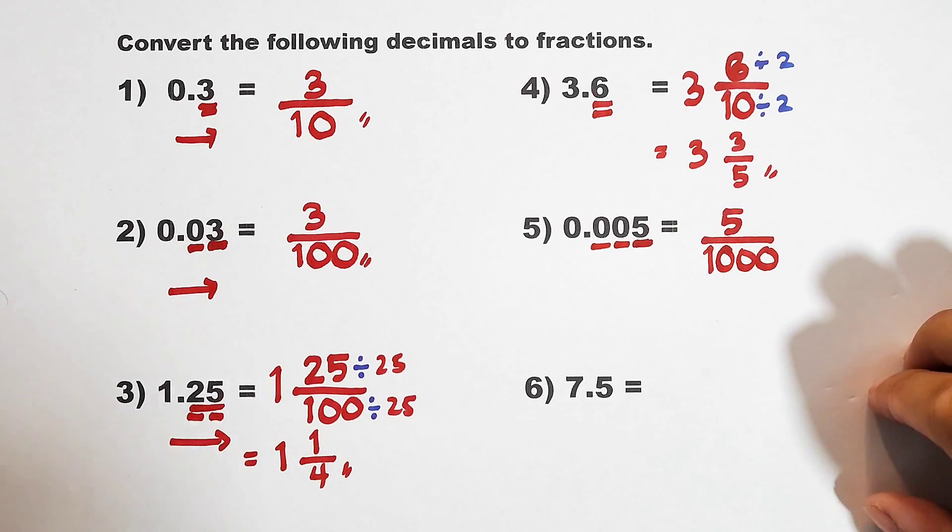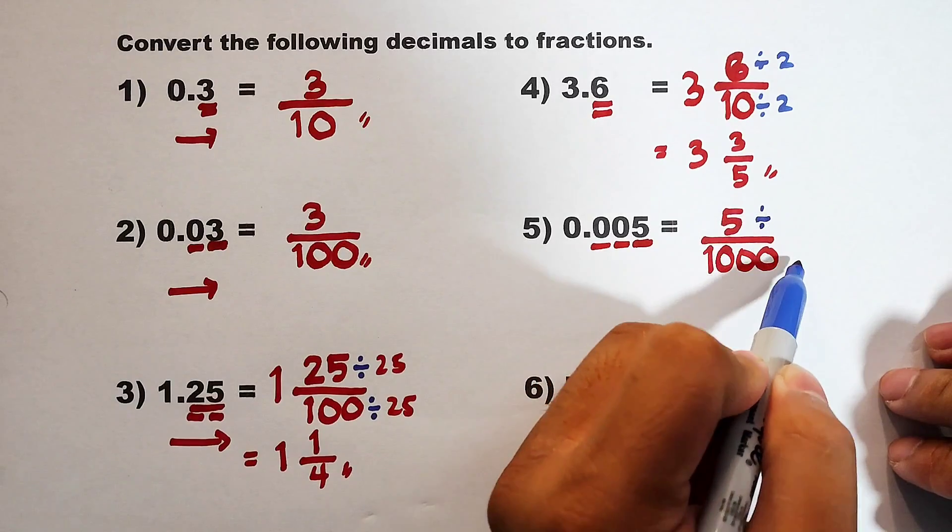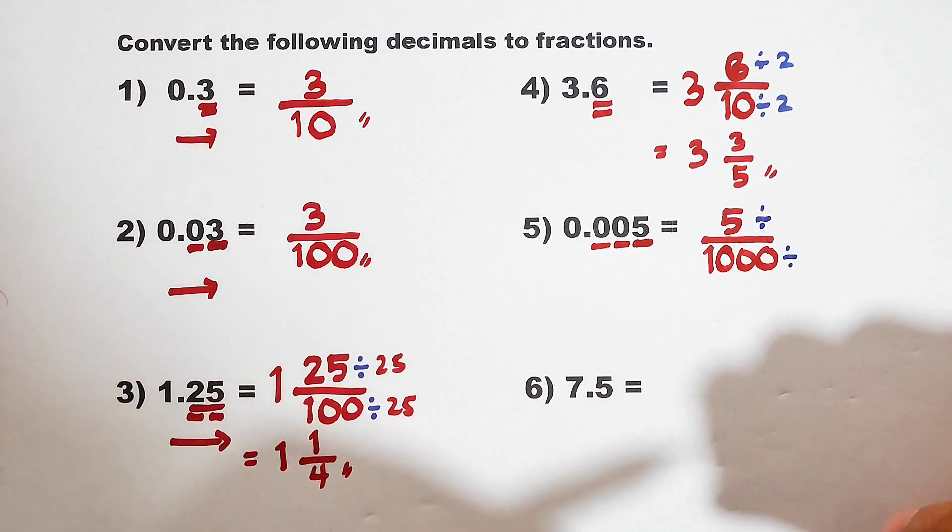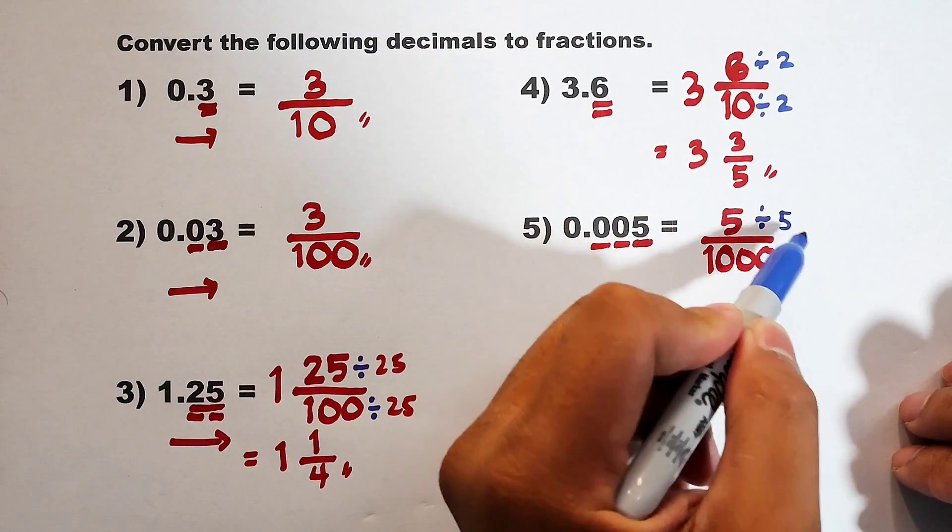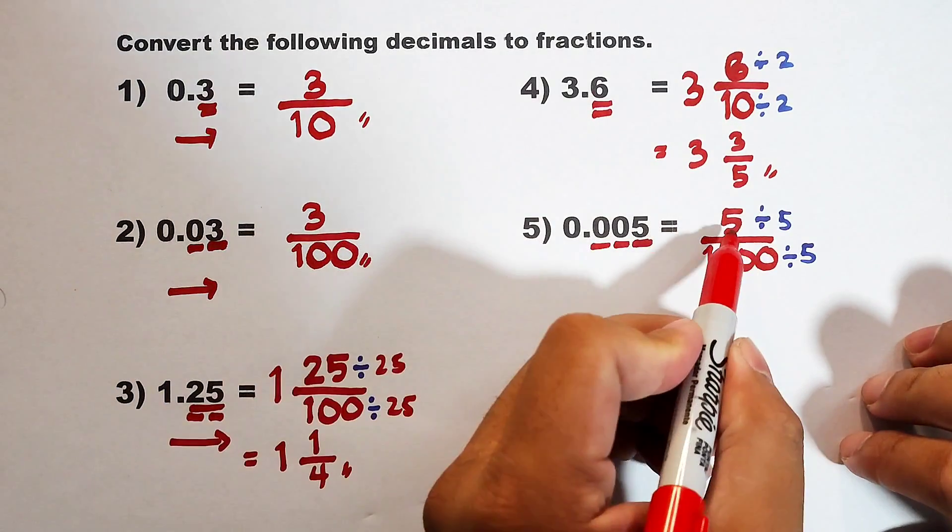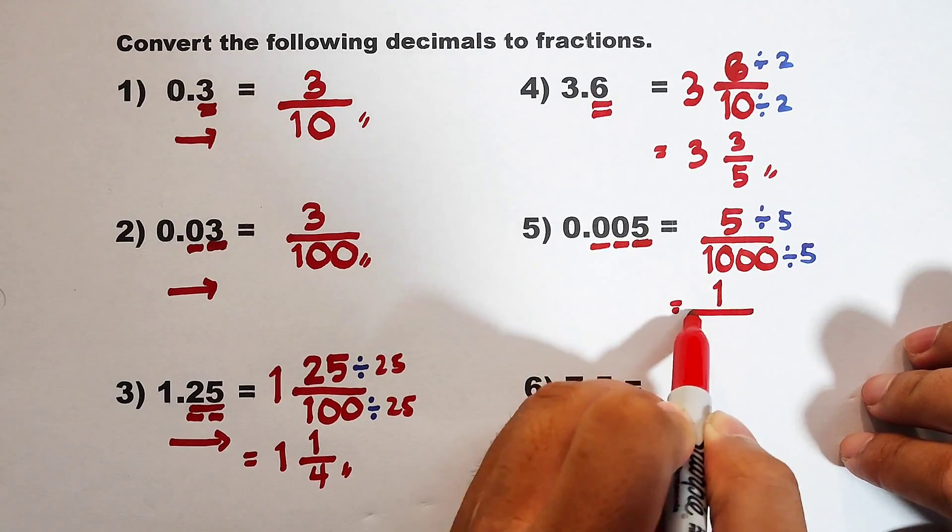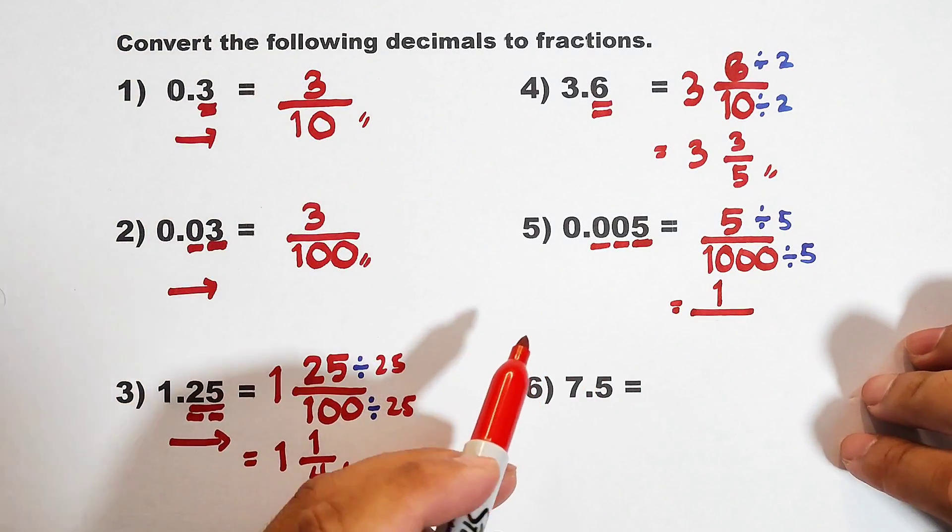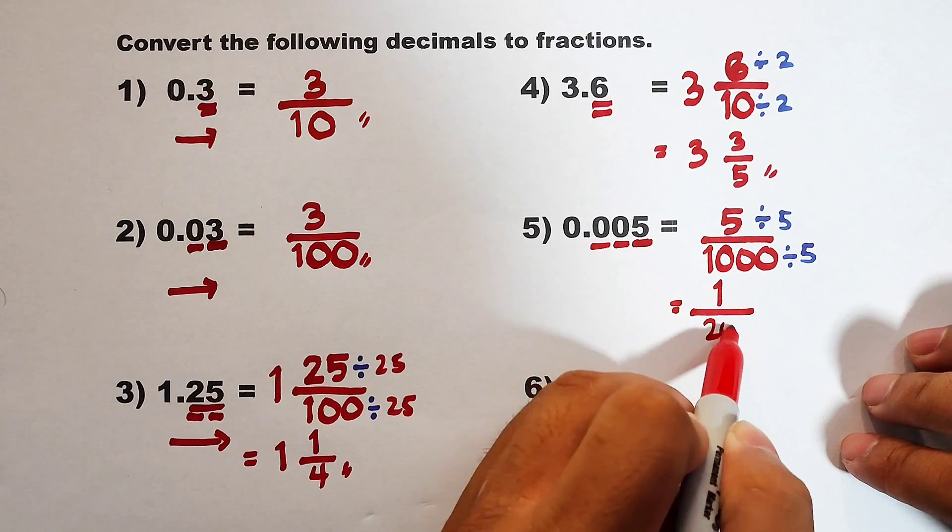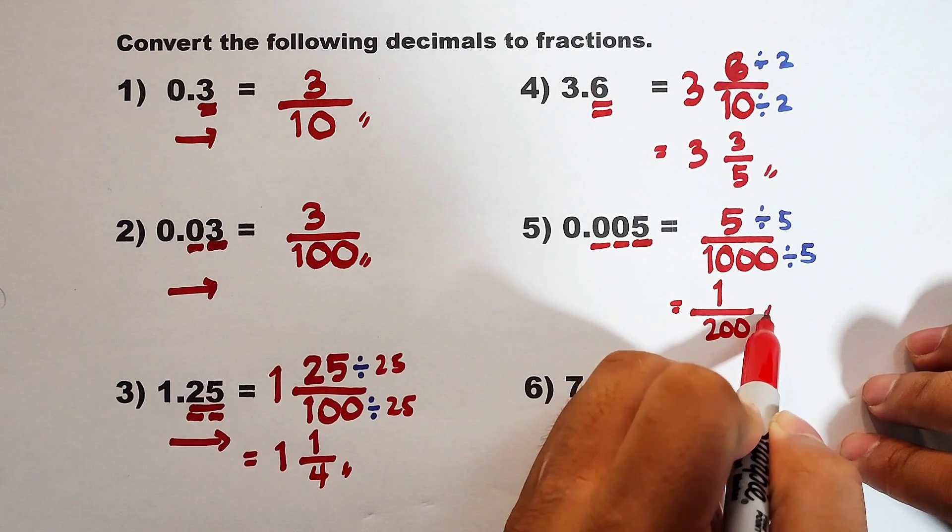What you need to do is to divide this by 5. To simplify this, 5 divided by 5 is 1 over 1000 divided by 5 is 200. For number 5, this is the answer, guys.